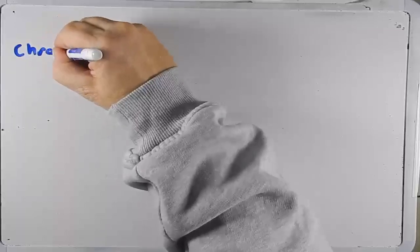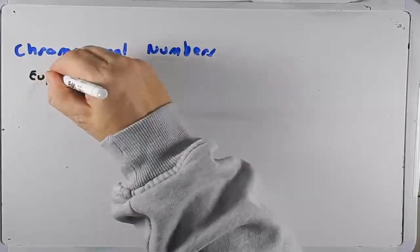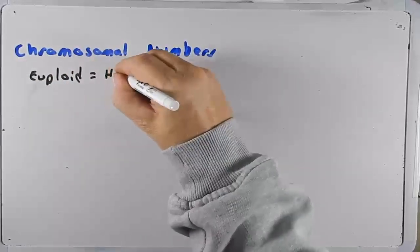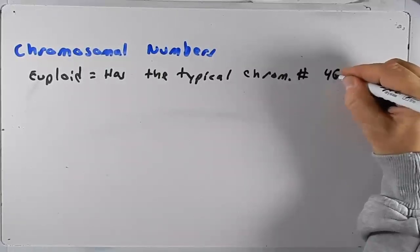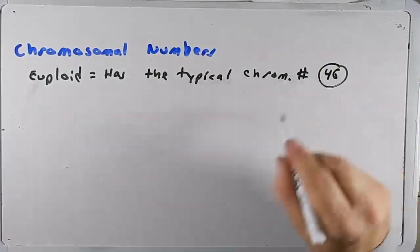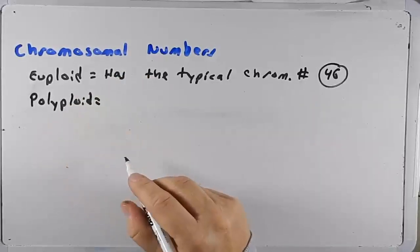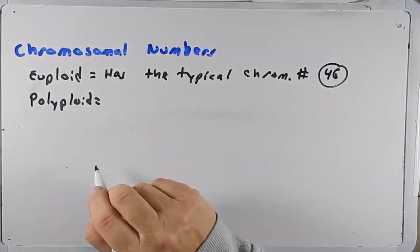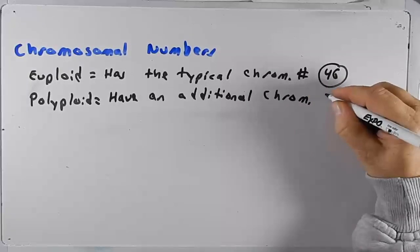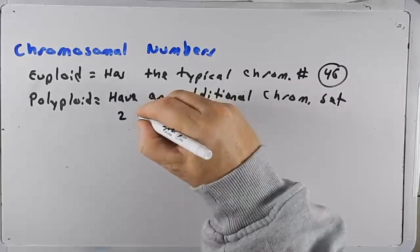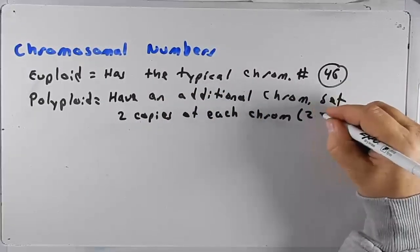The first category is chromosome numbers. First let's define what a euploid is — a euploid has the typical chromosome number. For humans that would be 46; we have 23 pairs of chromosomes for a total of 46. We also have a case known as a polyploid. Polyploids have an additional chromosome set, so usually we have two copies of each chromosome — that's 23 times 2.